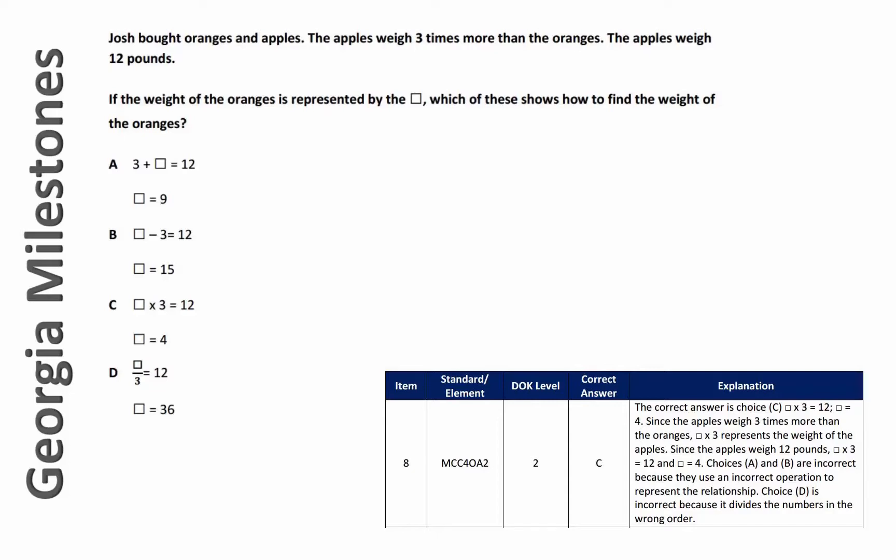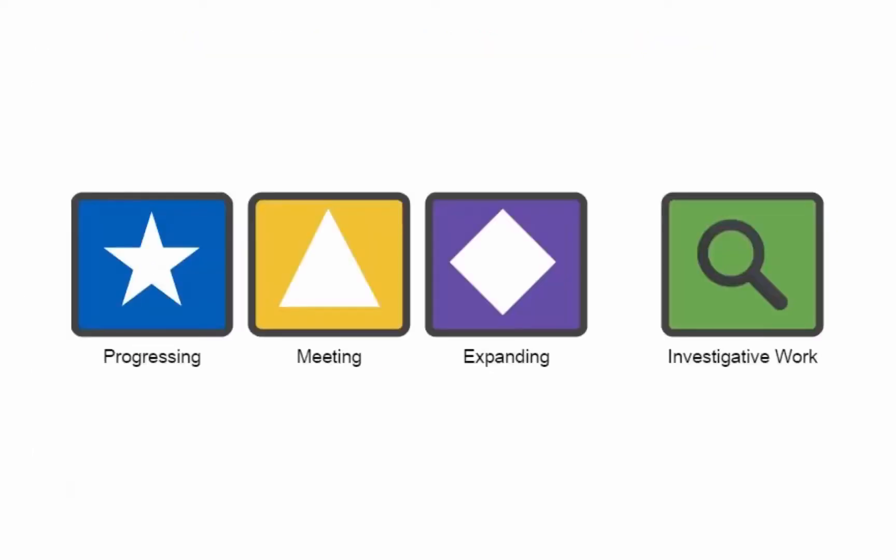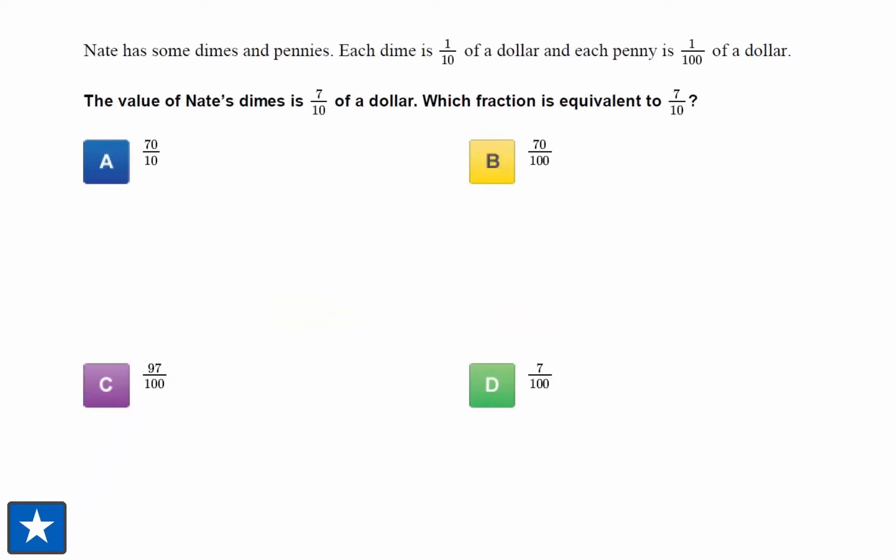Let's take a look at the types of problems that are available in Classworks Applied Mathematics. Each Classworks Applied Mathematics activity contains four problems. The first of the Classworks differentiated problems is progressing. This level is most appropriate for students who are working towards establishing a foundational understanding of the concept.